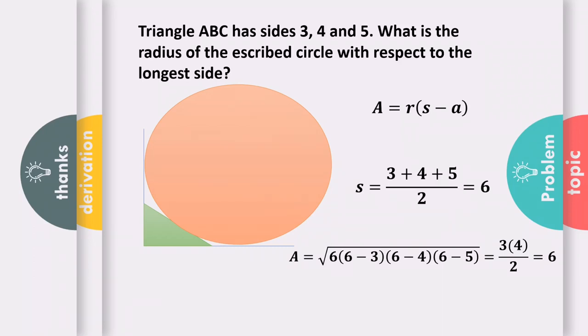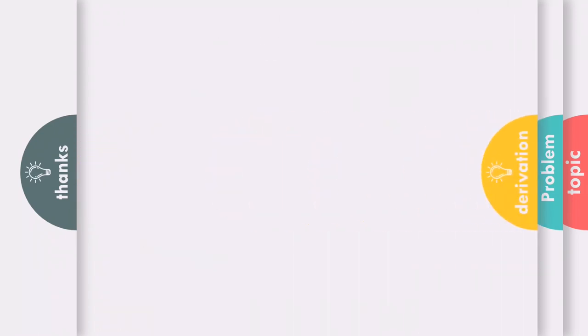Now, we can rearrange the formula area equals r times (s - a). The formula for the radius becomes area over (s - a). Our area is 6 over the semi-perimeter of 6. The longest side is 5. So the escribed circle radius with respect to side 5 equals 6.